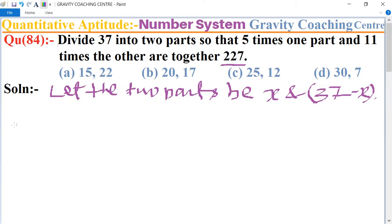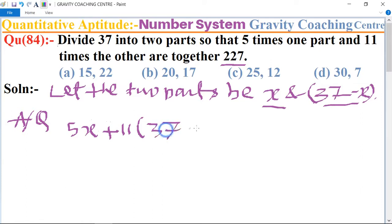And according to the question, five times the first one, so 5x plus eleven times the other part, so the other part is 37 minus x, equal to their sum equal to 227.